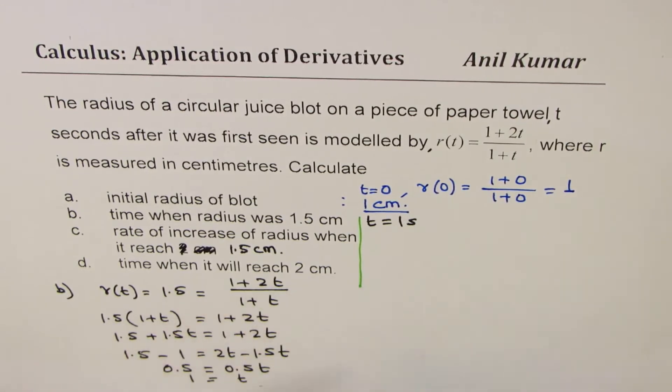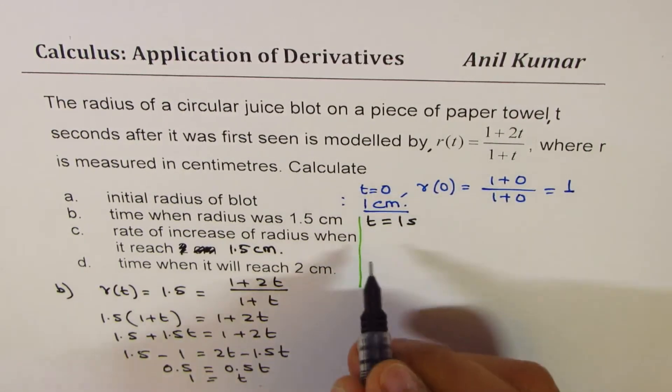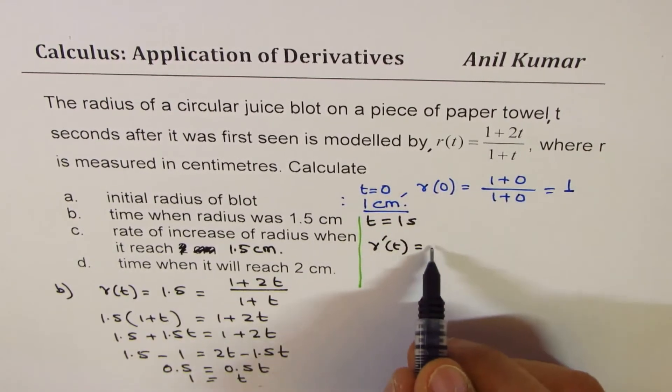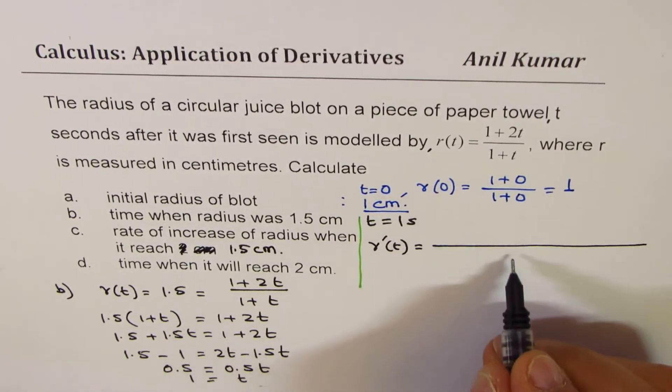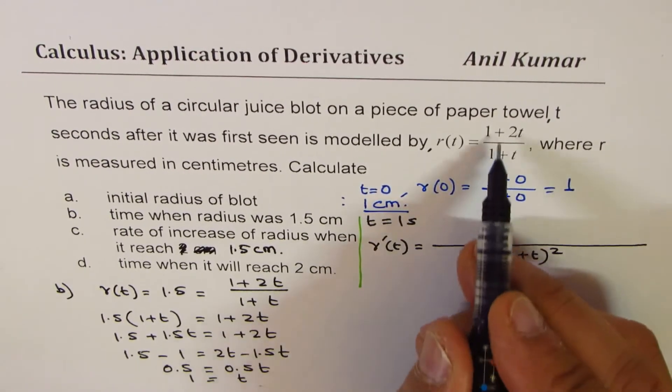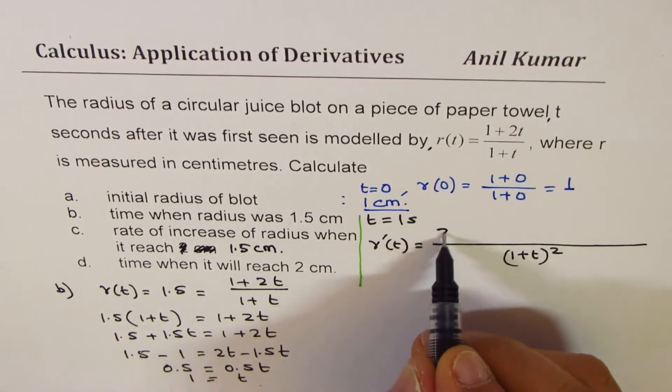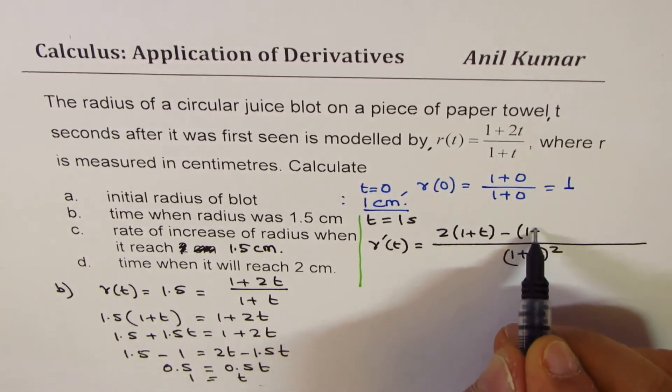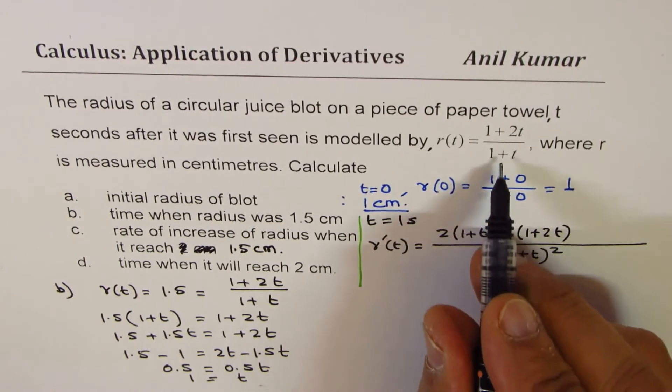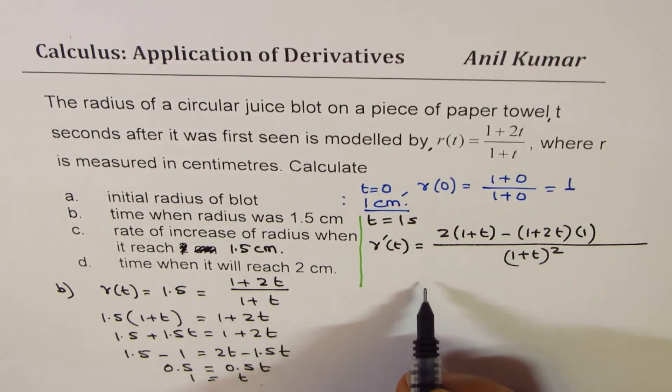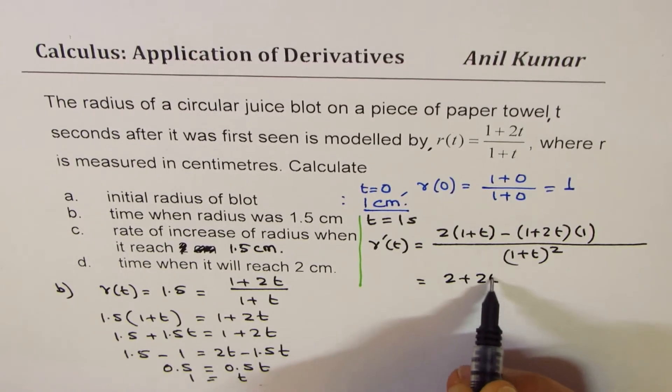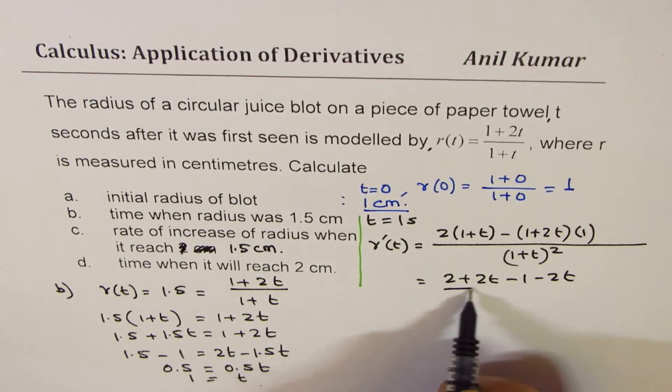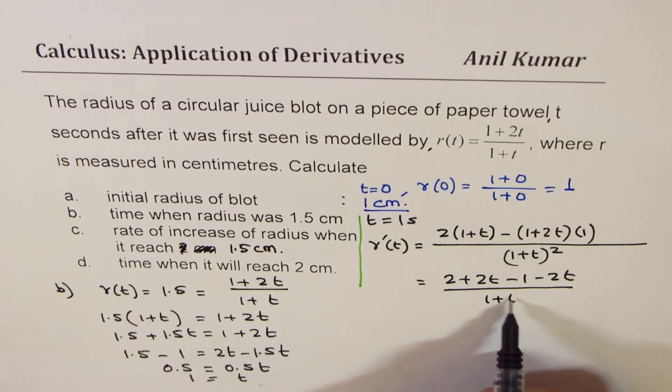So r'(t) - apply the quotient rule. We have (1 + t)² in the denominator. Derivative of (1 + 2t) is 2, times (1 + t) minus (1 + 2t) times derivative of denominator which is 1. So we get (2 + 2t - 1 - 2t)/(1 + t)².